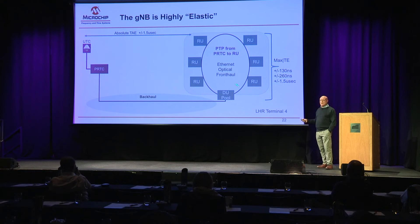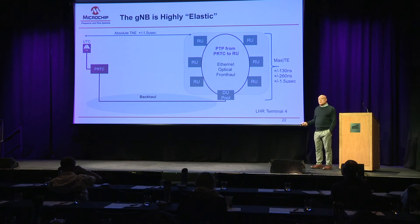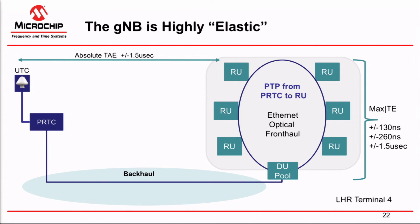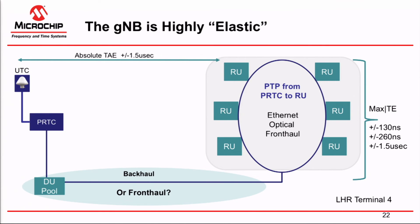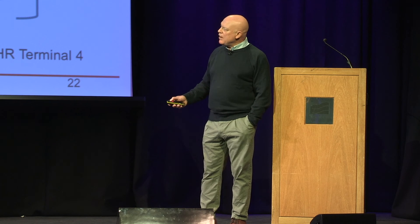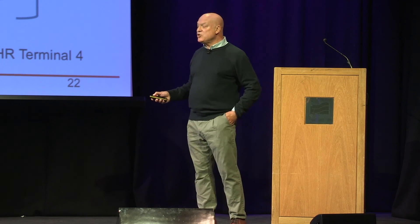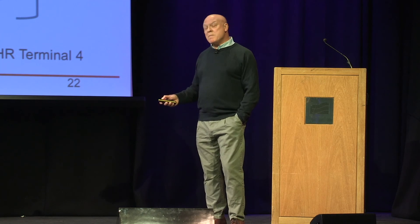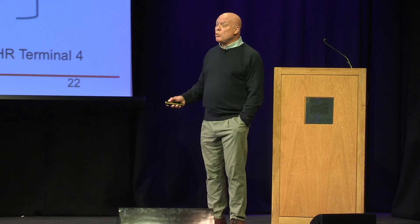So we have a DRAN that's a gNodeB, or a building that's a gNodeB, or a whole terminal that's a gNodeB. Or could it be the whole of Isle of Dogs that's a gNodeB? Why not? Because the DU can go anywhere. Is this backhaul or is this fronthaul? I think it's fronthaul. All you have to do is meet the time requirements — if your network has fast boundary clocks, you're coming in at relative 130 or 260 nanoseconds to these RUs, and there's your gNodeB. It can be a very large area, so it requires careful engineering of the time error, but as long as you can meet that time error, where you put the DU pool doesn't really matter.